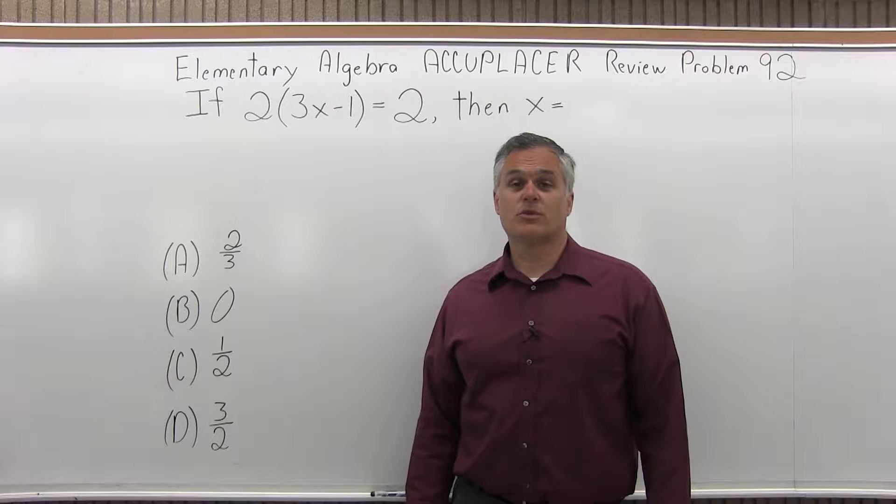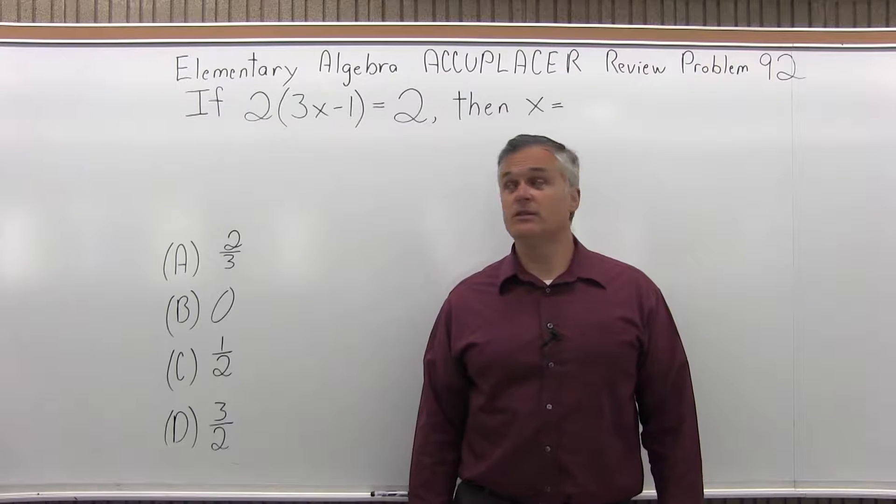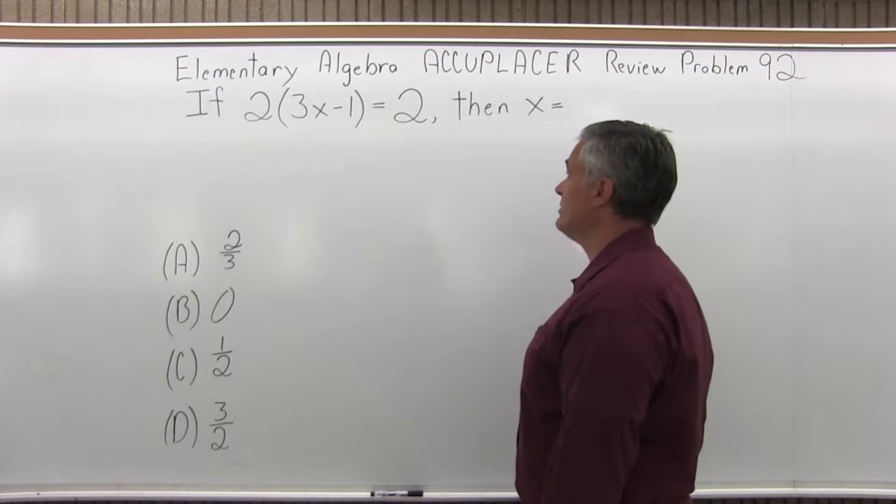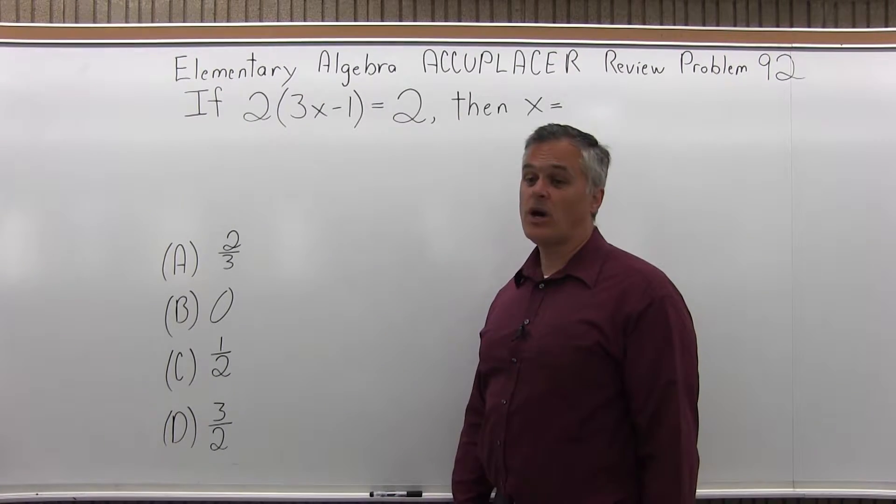This is the Elementary Algebra Accuplacer Review, Problem 92. It says if 2 times (3x minus 1) equals 2, then x equals which one of the following four options?